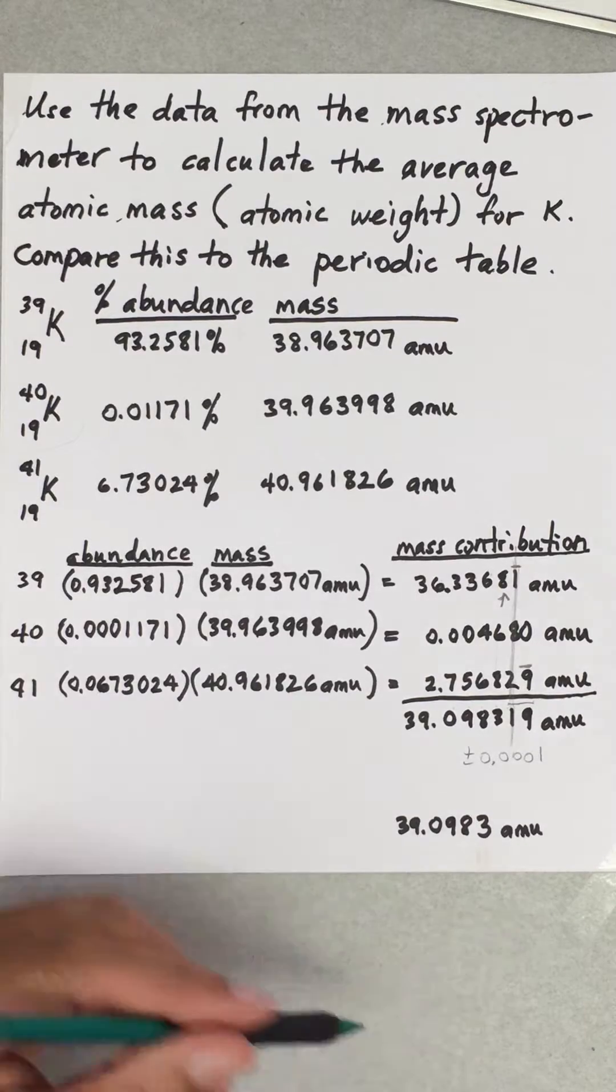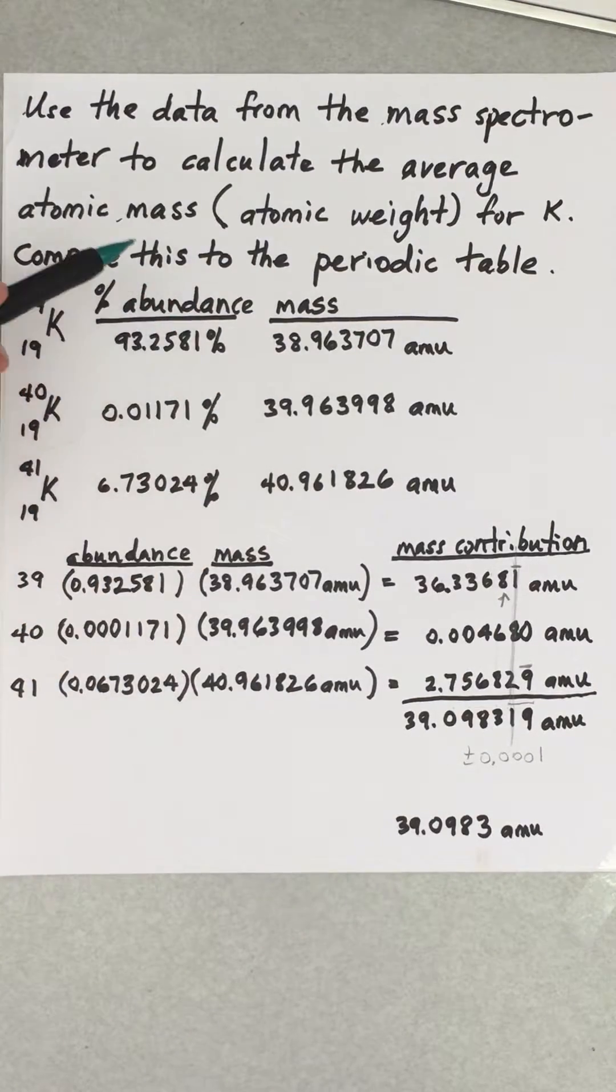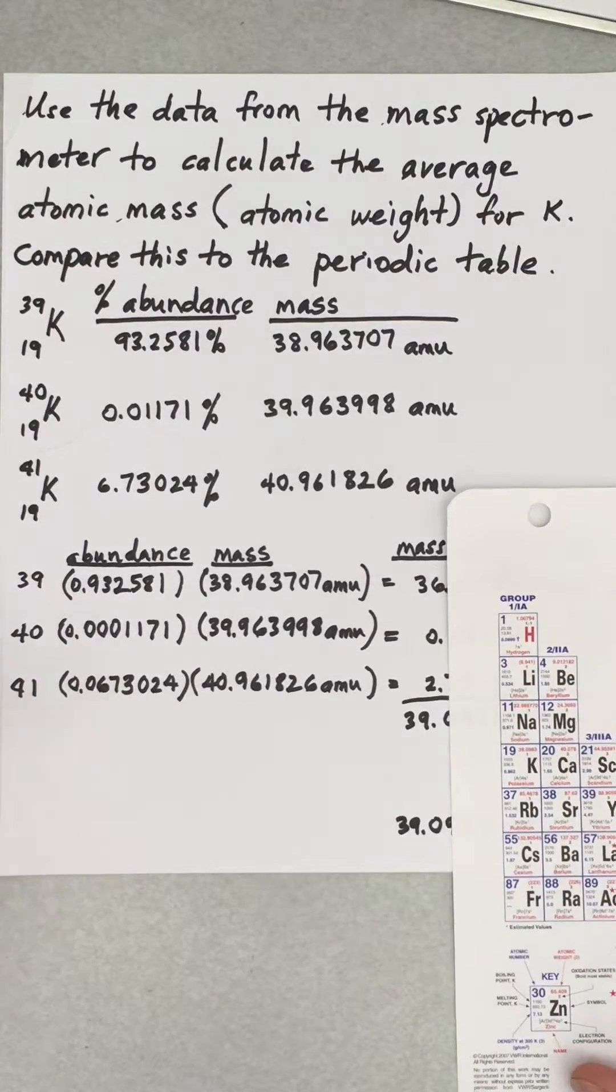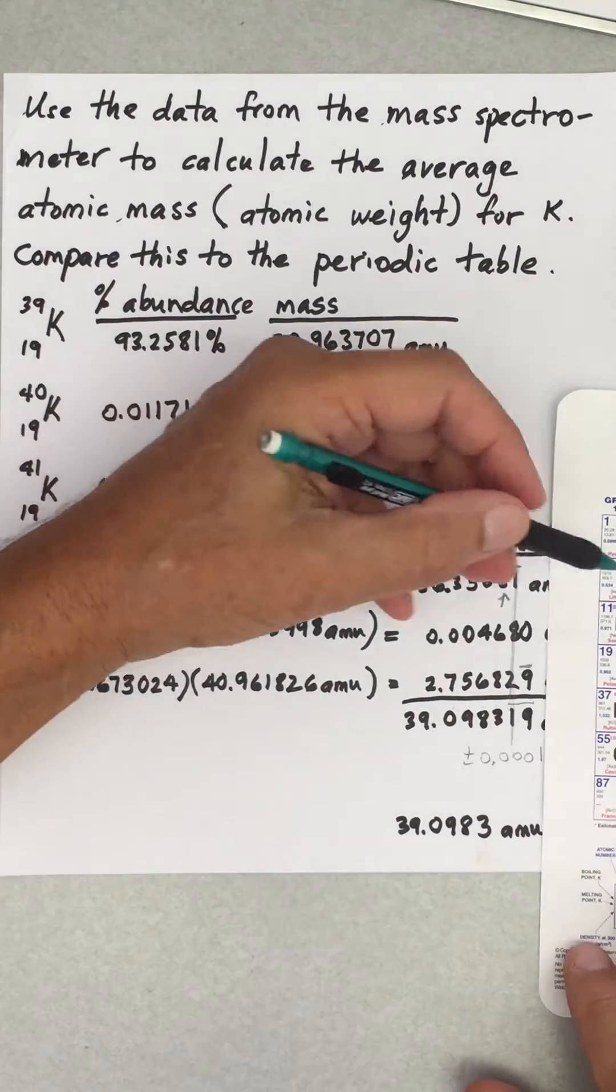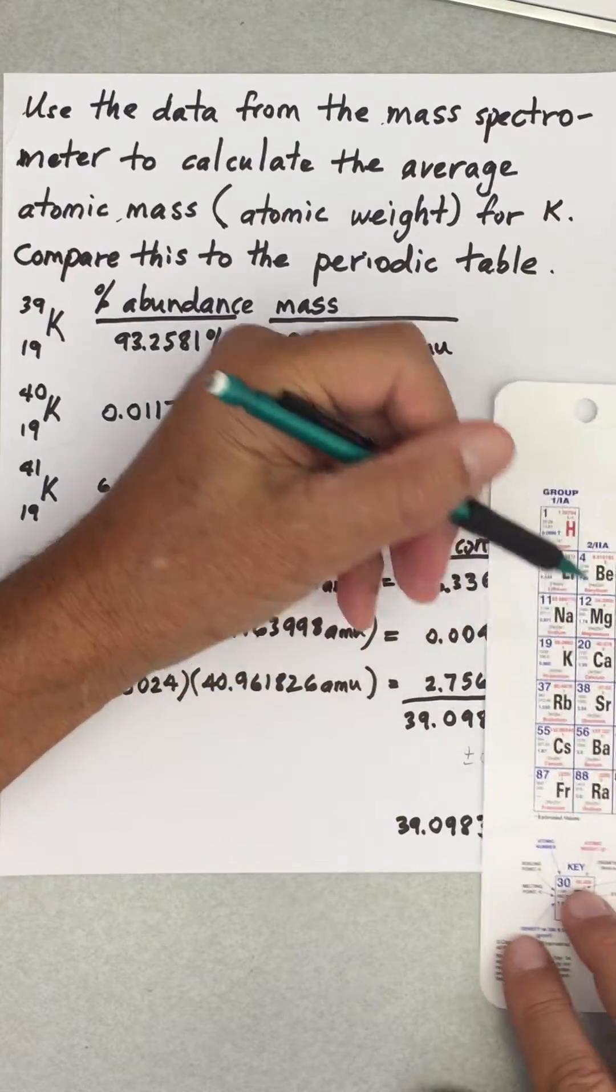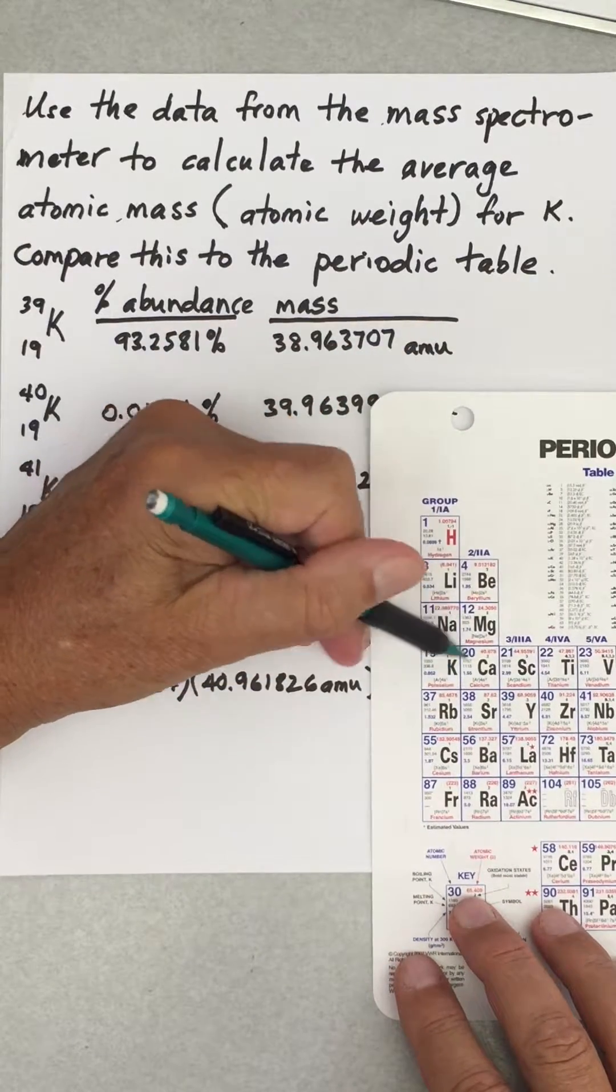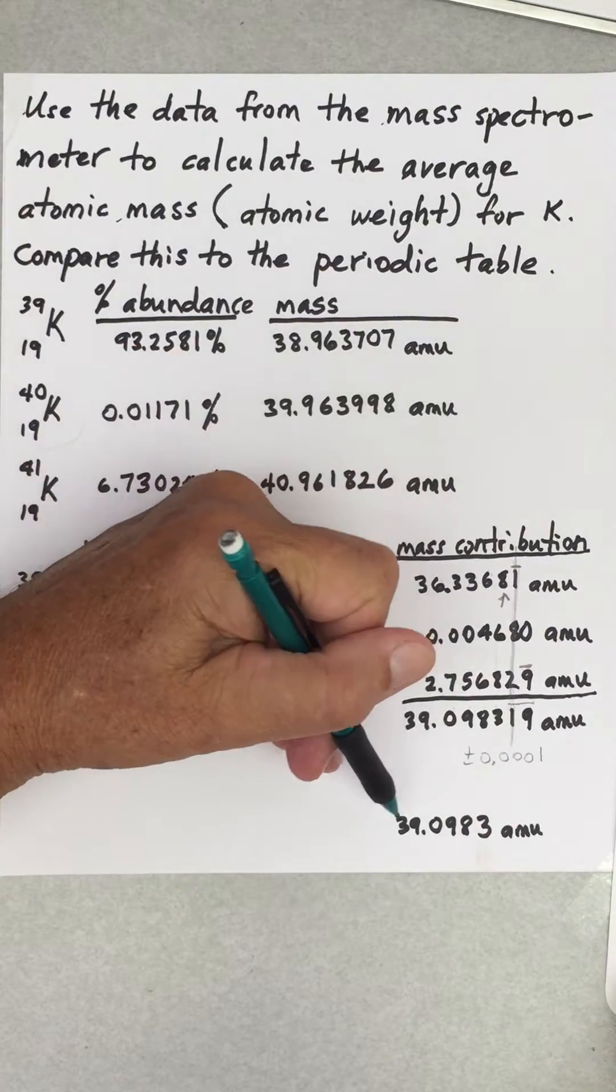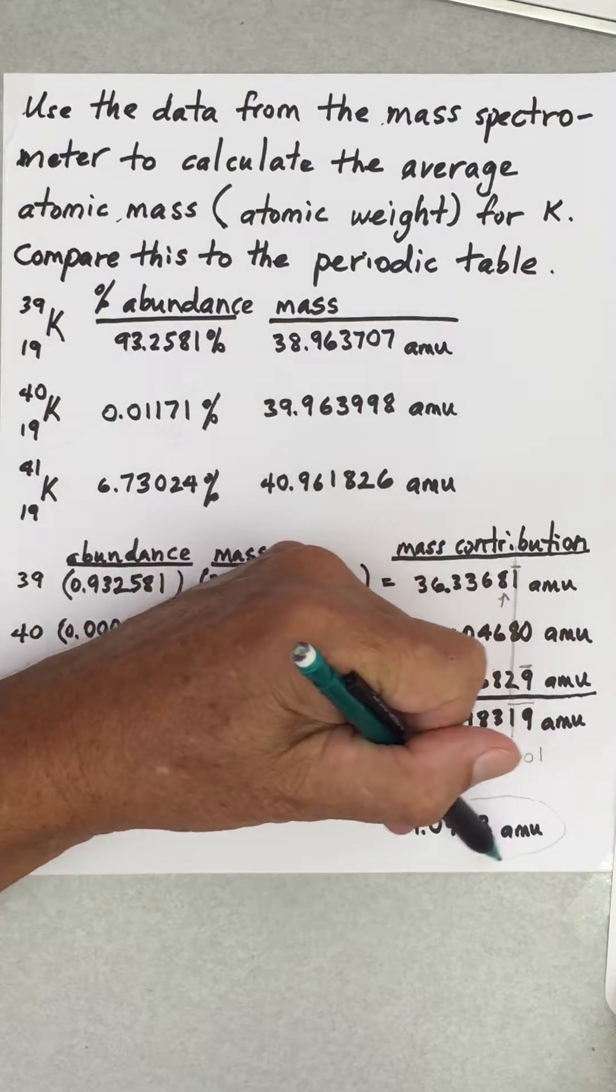So that is the atomic weight for this data. How does that data correlate to what's on the periodic table? So here's the periodic table. Here is the atomic weight given here. So 39.0983 happens to be the same exact number as we got here.